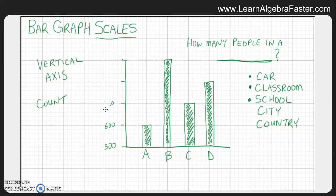So that would be an appropriate scale for a school. We could also change the increments. We could go maybe 550, 600, 650, 700. And then, of course, A, B, C, and D would be the different types of schools.